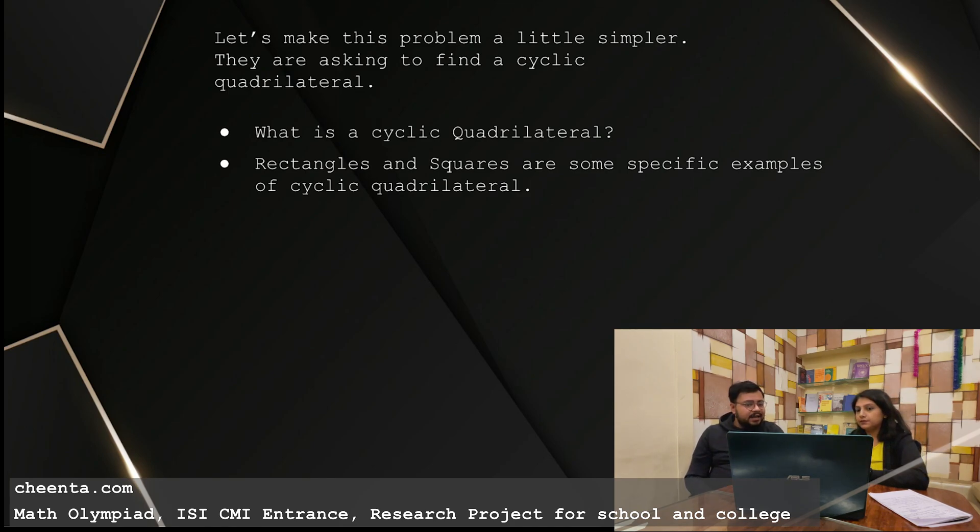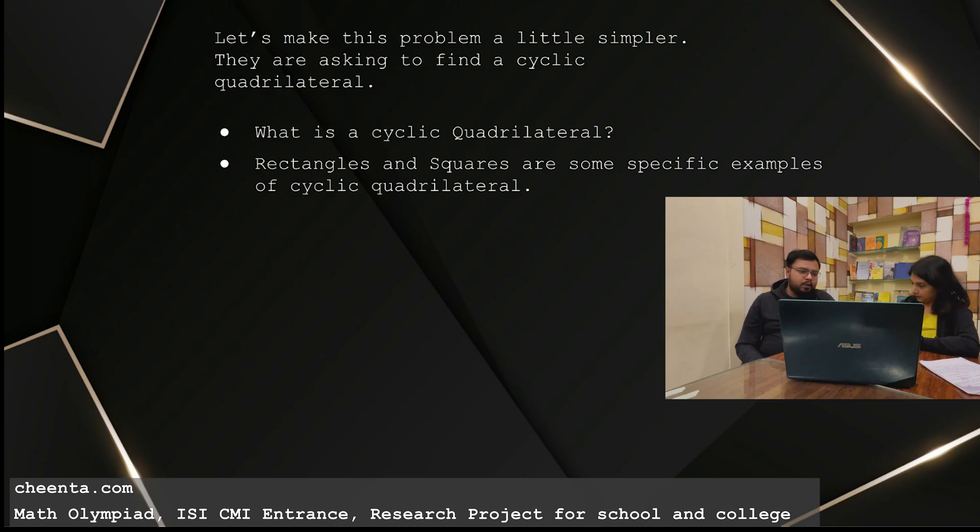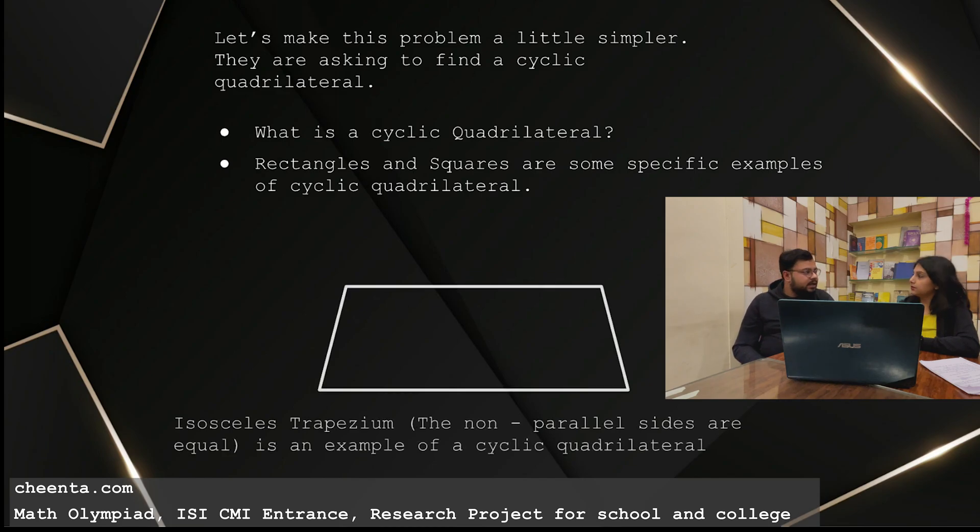There is another type of cyclic quadrilateral, which is very important to us for this problem, which is an isosceles trapezium. So you definitely know what is a trapezium. When it is isosceles, in a trapezium we have two parallel sides and two non-parallel sides. But the thing is the non-parallel sides can be unequal also. But if it is equal, then it is called an isosceles trapezium. And it can be very easily proved that isosceles trapeziums are always cyclic. So maybe you guys can also try to prove this that isosceles trapeziums are cyclic.